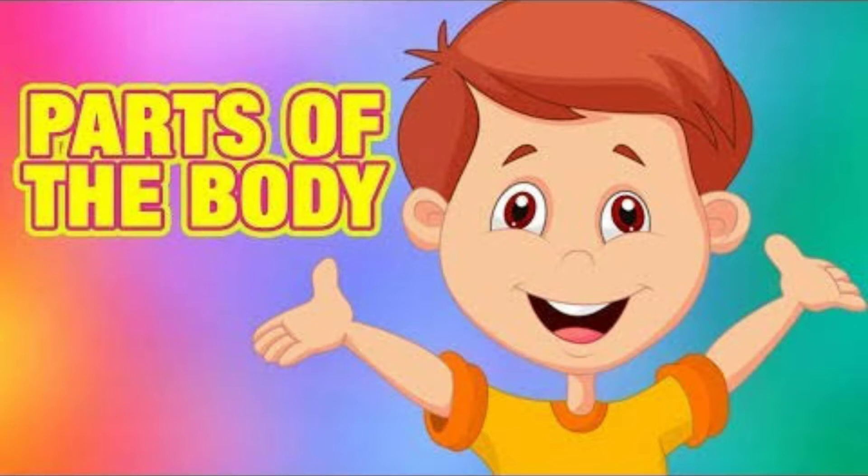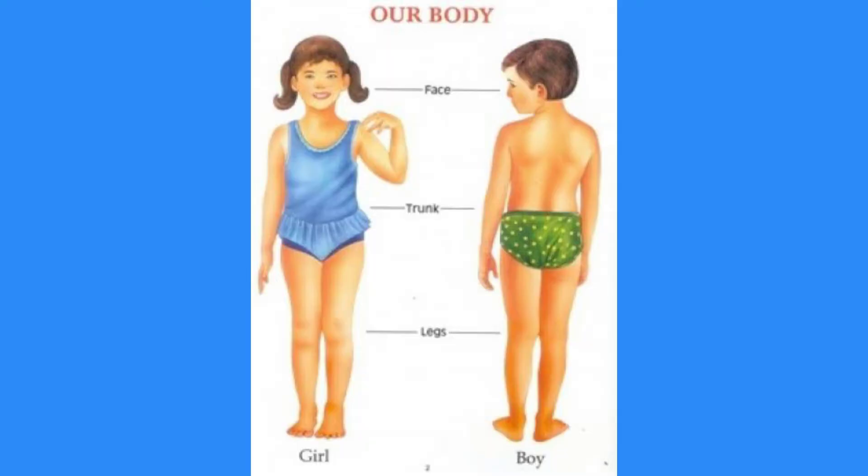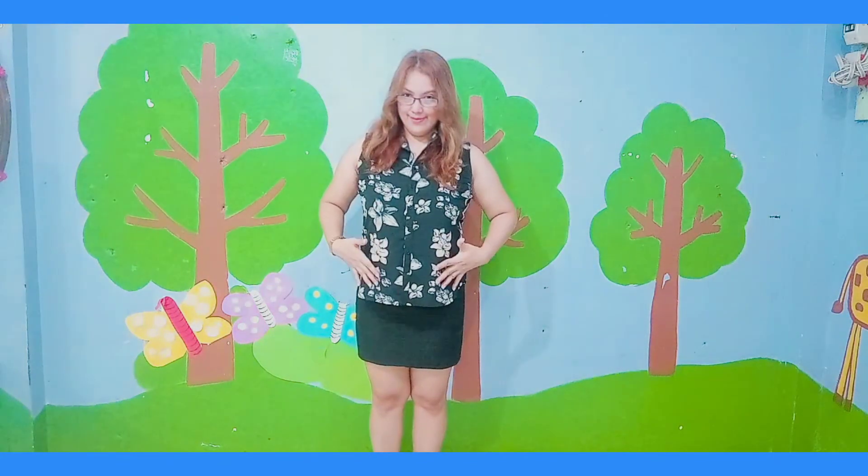Specifically, the three major parts. Take a look at this picture of a girl and a boy. It shows that each has a head, trunk, and limbs. Just like me — I have a head, trunk, and limbs.